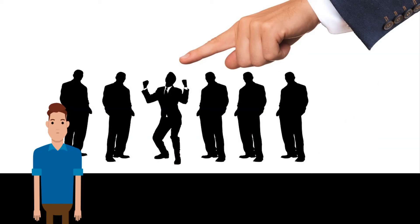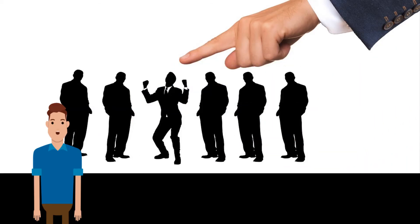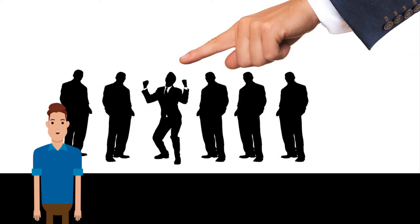The contract of employment is a legal agreement between the employer and the employee listing the rights and responsibilities of workers. It includes: the name of the employer and employee, a job title, a start date, hours of work, rate of pay and other benefits, payment schedule, holiday entitlement, and the amount of notice required to terminate employment. Employment contracts can be part-time or full-time. Part-time employment is typically between 1 and 30–35 hours a week, while full-time is usually 35 hours or more.